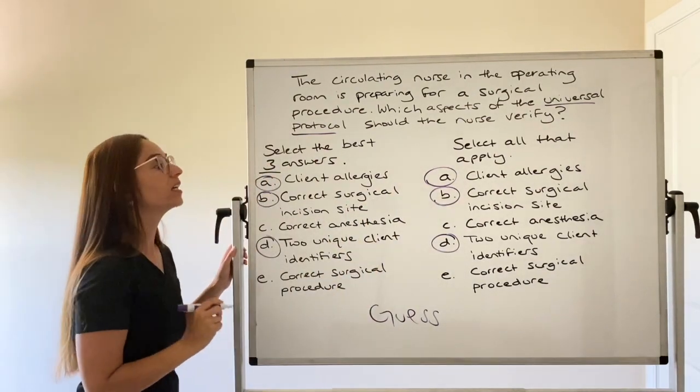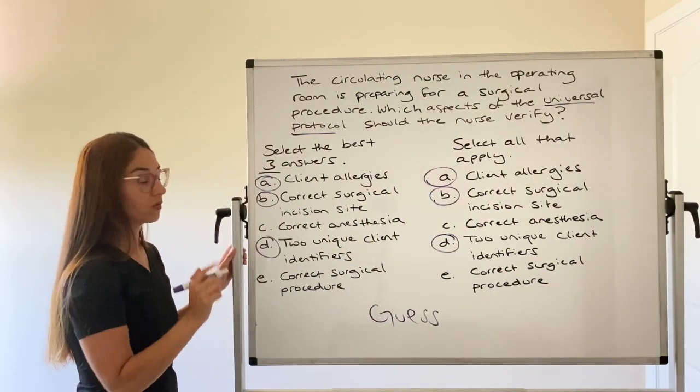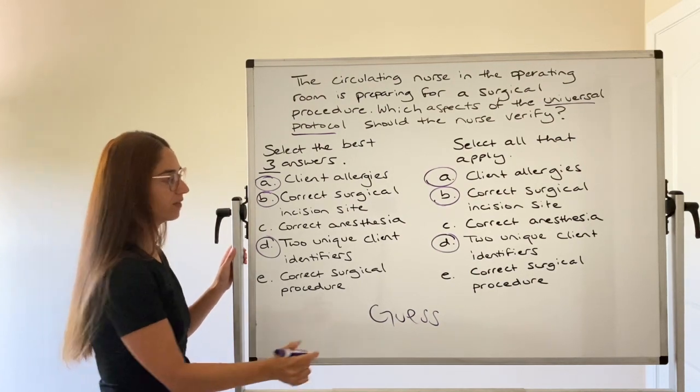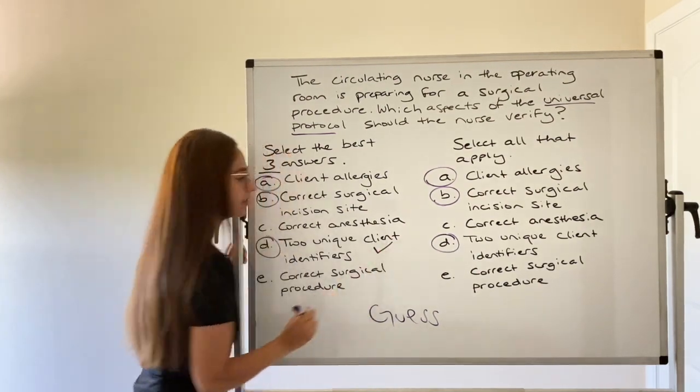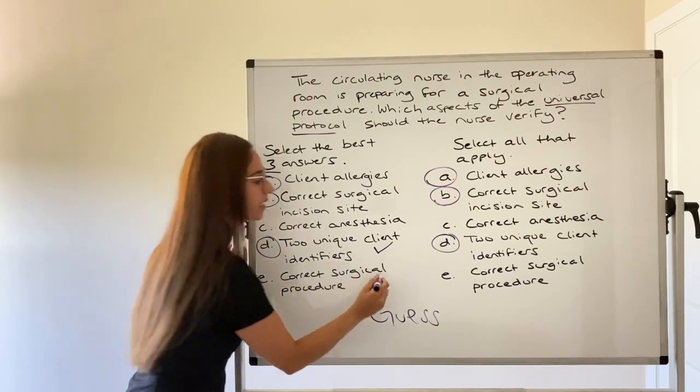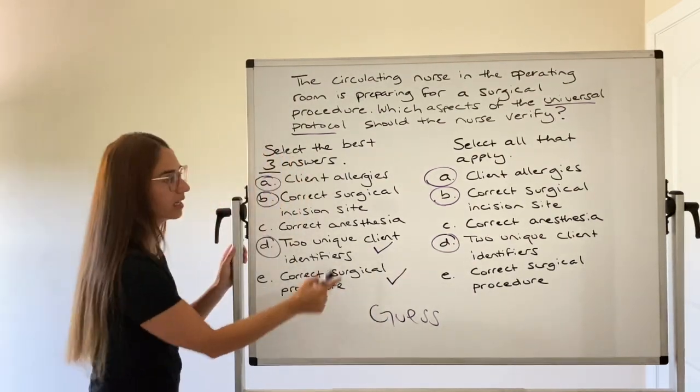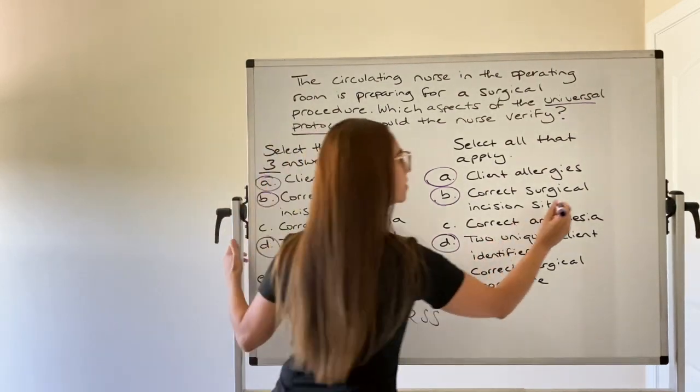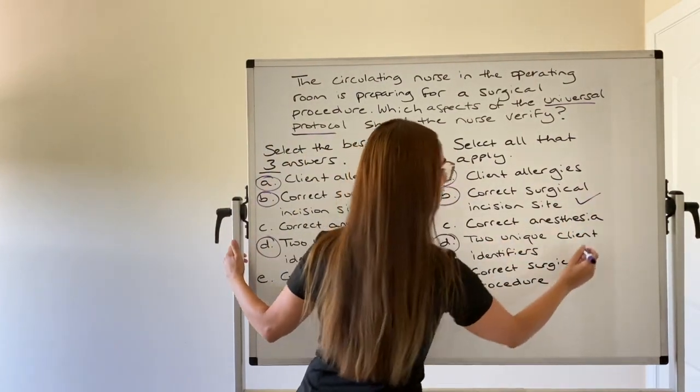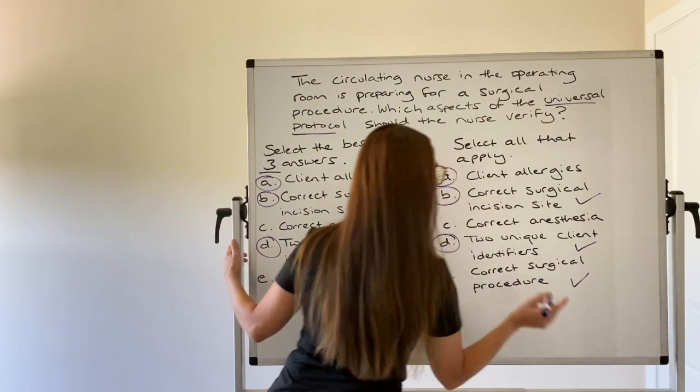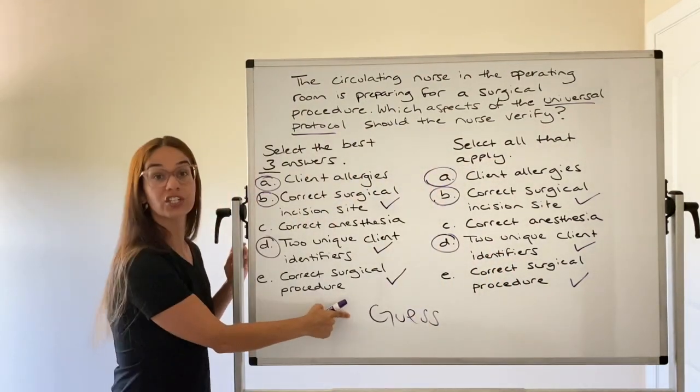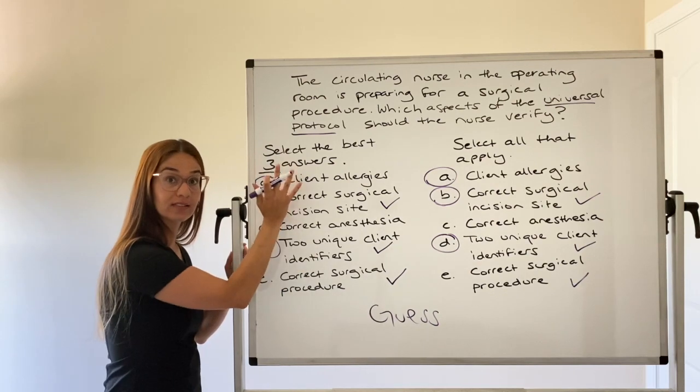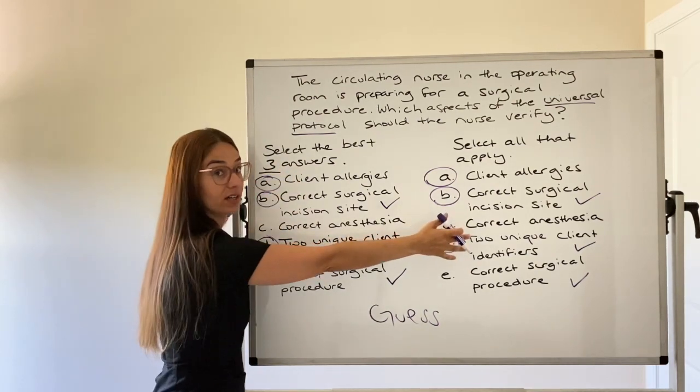So the correct answers, just a review of universal protocol. You should always verify the client, the correct procedure or surgery, and the correct surgical site. These are the correct three answers. Now we use the strategy of guessing, which you should always use here, select N, but don't ever use on select all that apply.